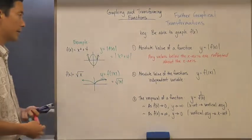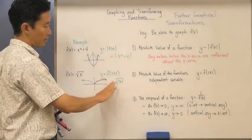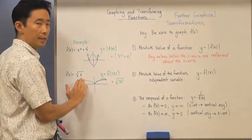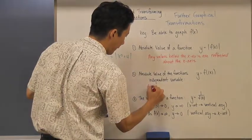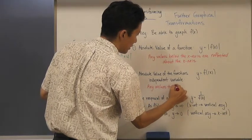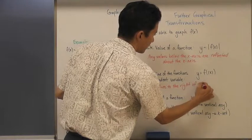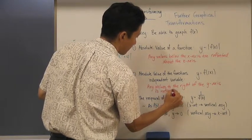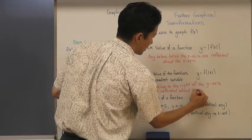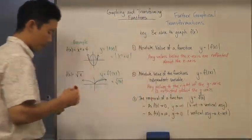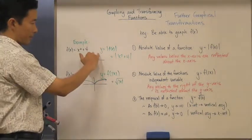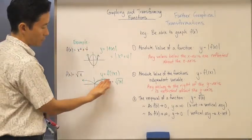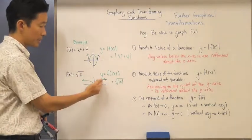What's happening is that any values to the right of the y-axis are then mirrored onto the left side of the y-axis. So any values to the right of the y-axis are reflected about the y-axis and become part of the graph. Notice this part on the right is still part of it - it's what's below the x-axis that gets flipped up, and what's on the right-hand side of the y-axis gets filled to the left.